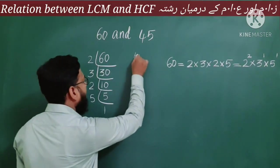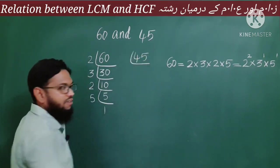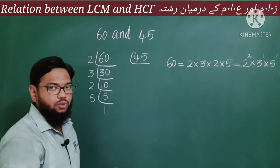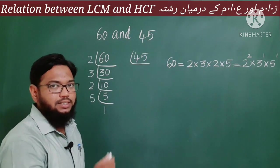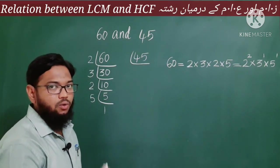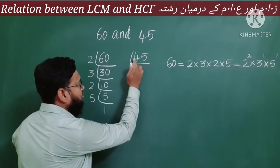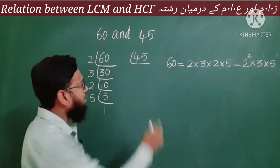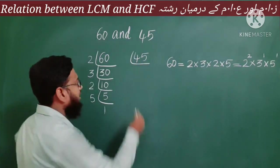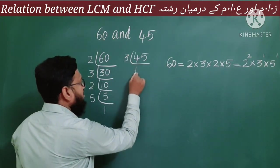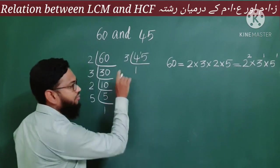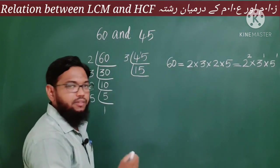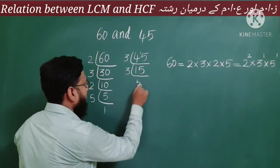Now let us take the second number, 45, and prime factorize it. From the rules of divisibility, since the units place has 5, it is not divisible by 2. The next prime number is 3. For the rule of 3, you add the digits: 4 + 5 = 9, which is divisible by 3. So 45 is divisible by 3. Three fifteens are 45, so we get 15 next. Three fives are fifteen.